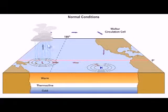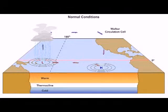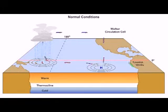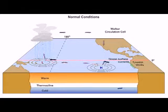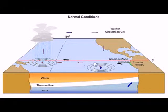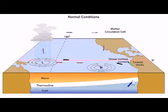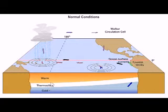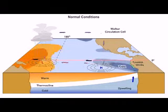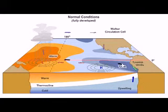A circulation cell called the Walker Cell is set up here. The effect of that is to push the water away from South America. Ocean surface currents are pushed in this direction, taking warm water and pulling it away to the west, and letting cold water come up from below. Here we have warm water, the thermocline — the big change from warm to cold — and then cold water down underneath. As that wind blows and pulls the water away from South America, you tend to get cold upwelling water near South America.